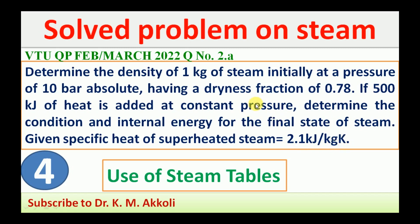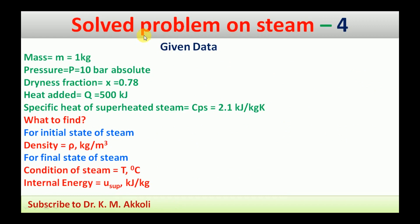This numerical is on steam and it has two parts — one is the initial state and another is the final state. For the initial state, we have the condition of 10 bar pressure and dryness fraction of 0.78, and we need to find the density. For the final state, after addition of 500 kilojoule of heat at constant pressure, the pressure remains at 10 bar, and we have to determine the condition and internal energy. The specific heat of superheated steam is given.